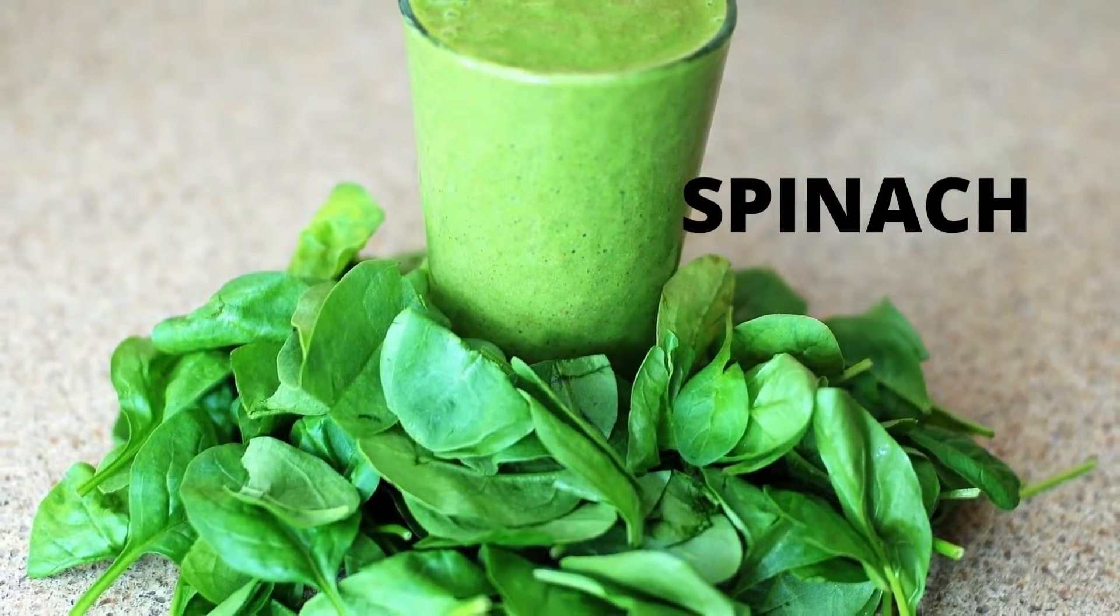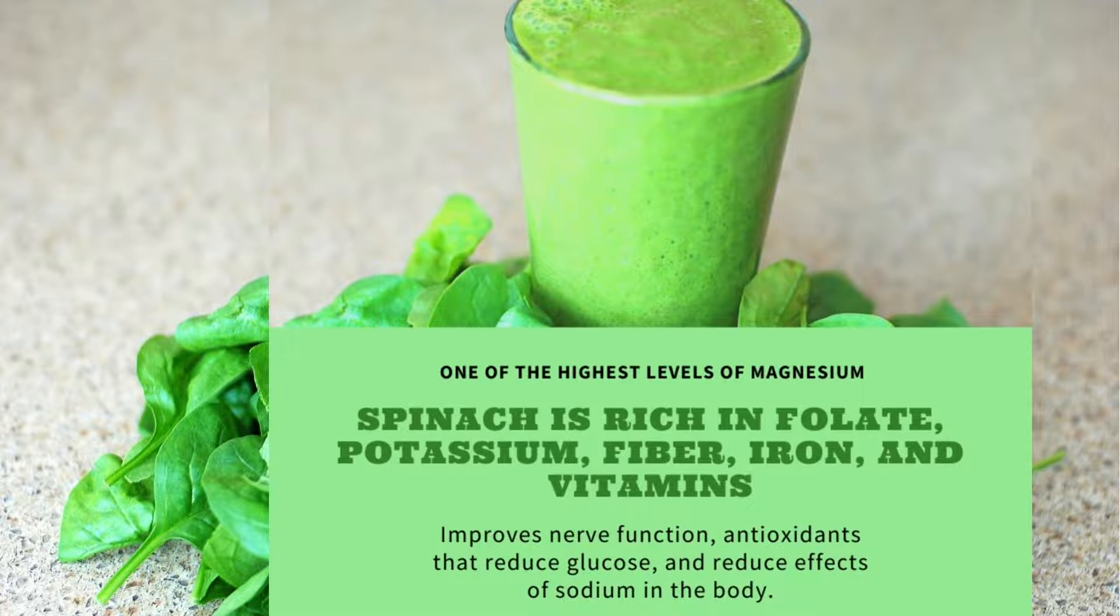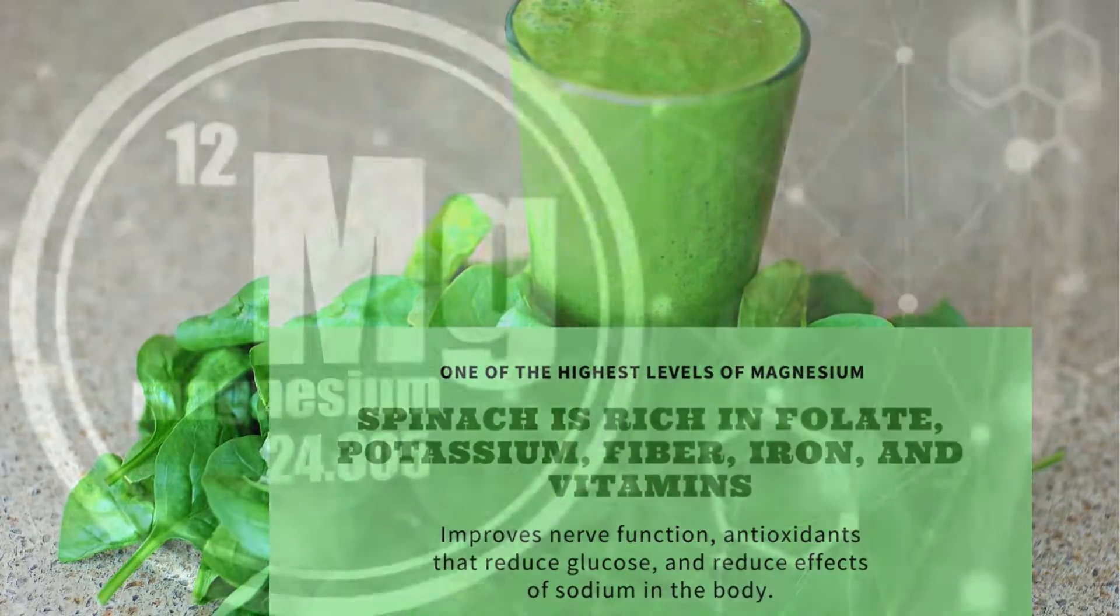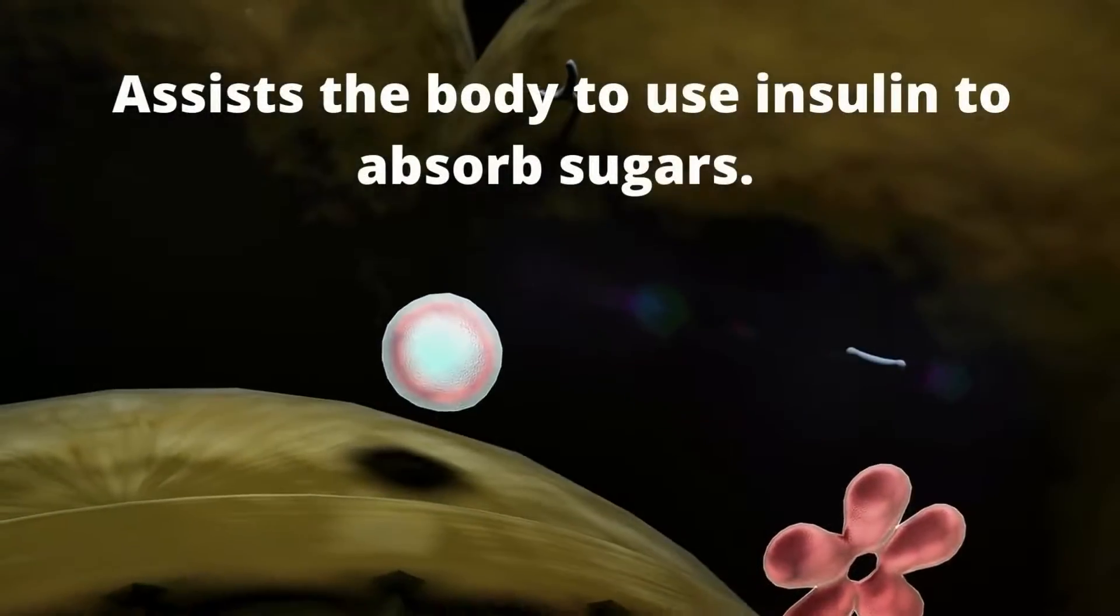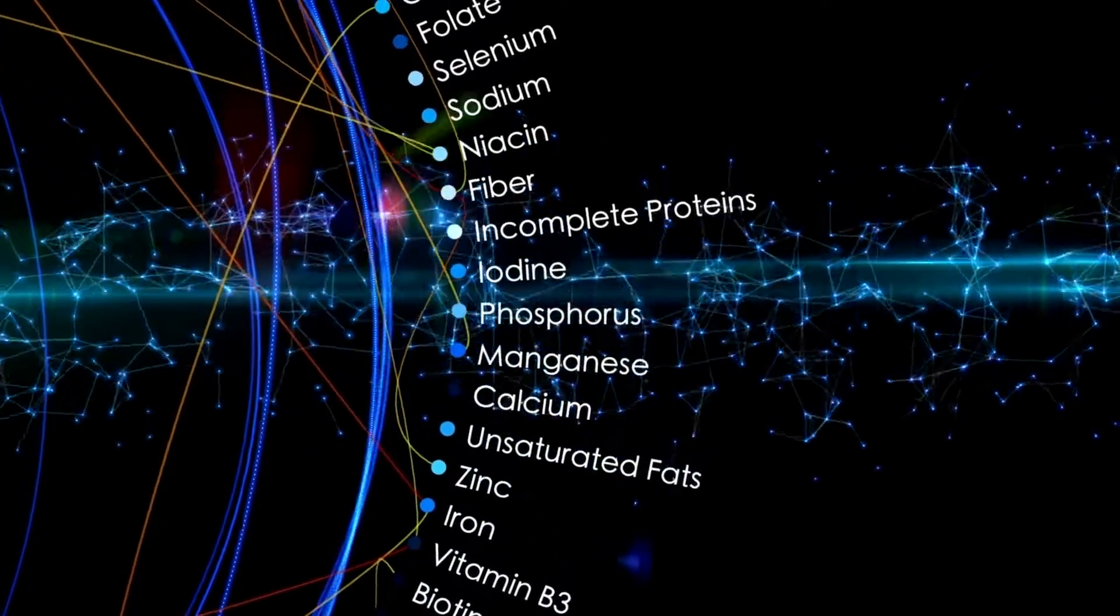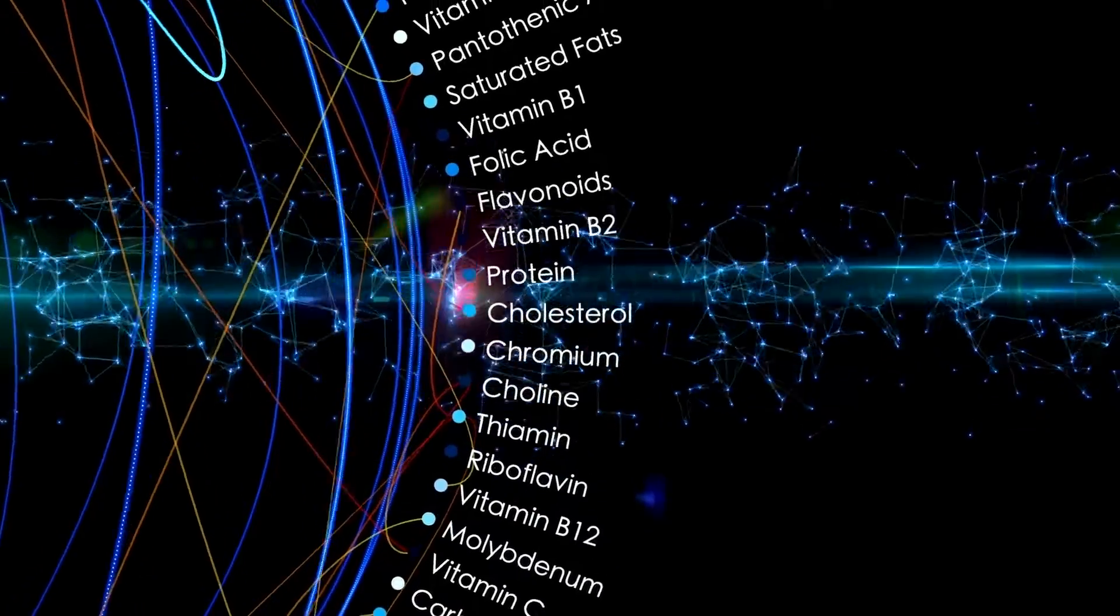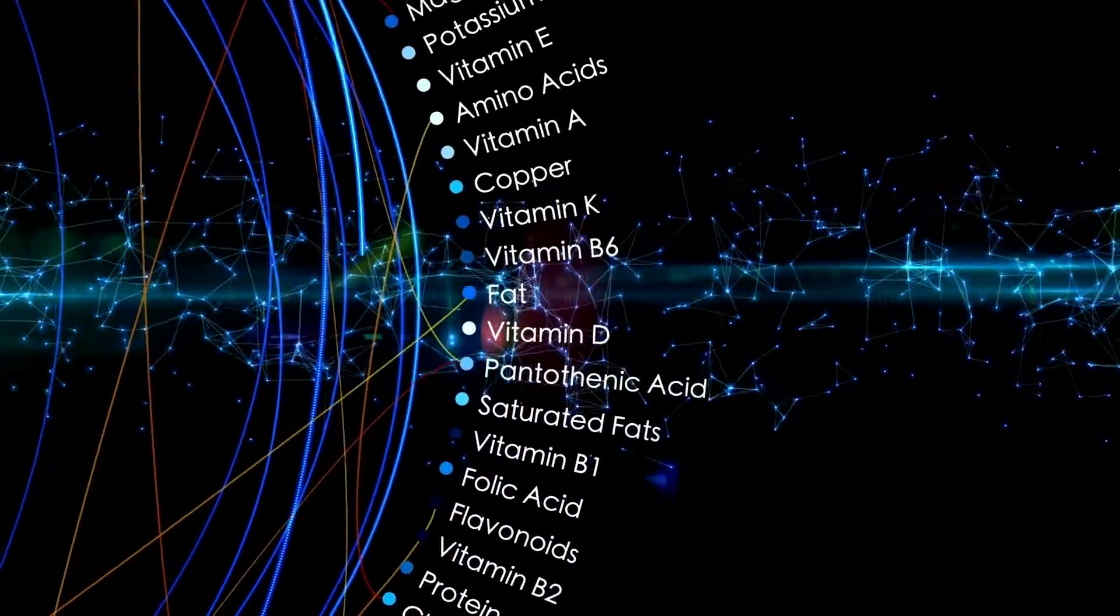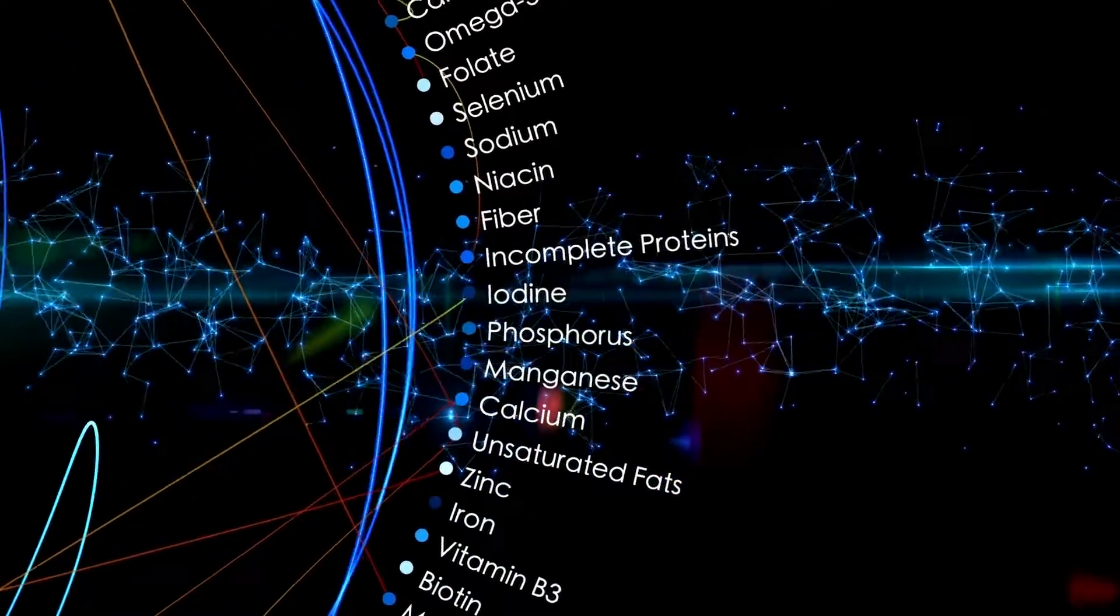Spinach. Hands down, spinach is one of the best sources of magnesium, a vital nutrient that assists the body to use insulin to absorb sugars. High in vitamin K and folate, essential nutrients to manage blood sugars more efficiently. It is also a rich source of vitamin C, E, iron and even calcium. And of course, the anti-inflammatory antioxidants, quercetin and kaempferol.